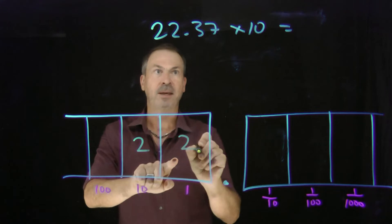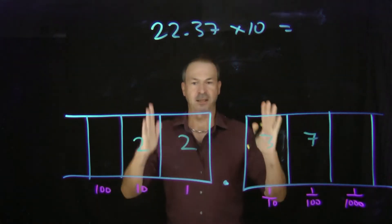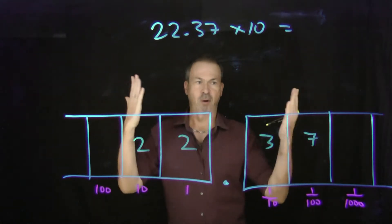That's 2 of these, 2 of these, 3 tenths and 7 one-hundredths. There's 22.37. Just writing numbers instead of dots.